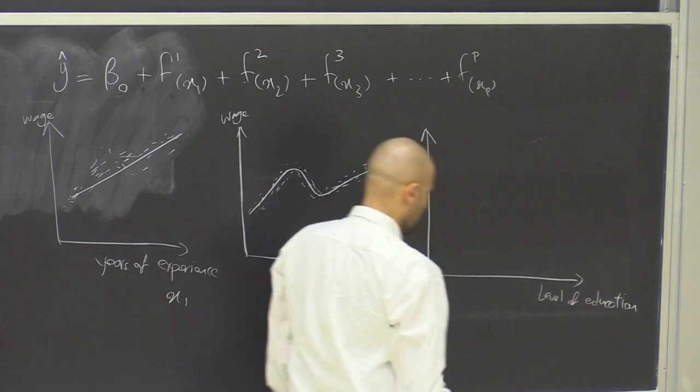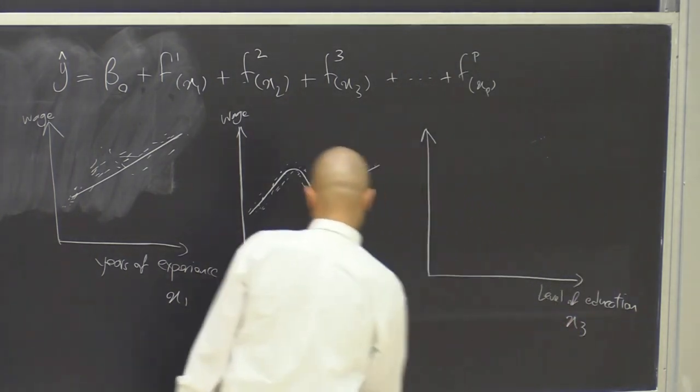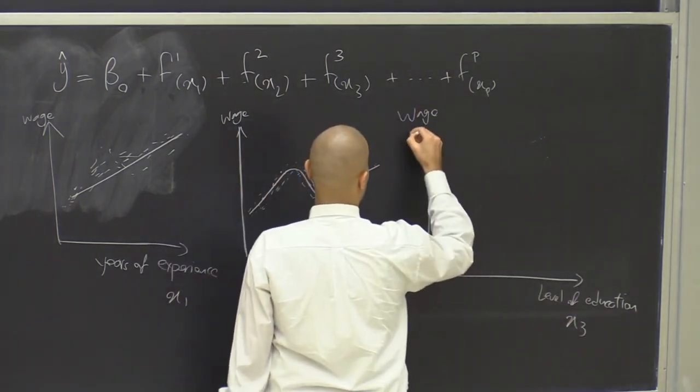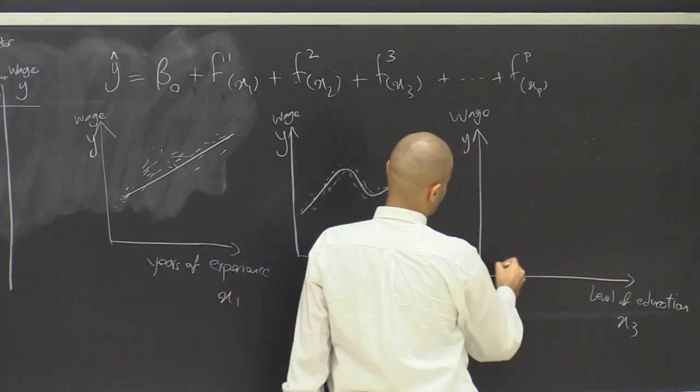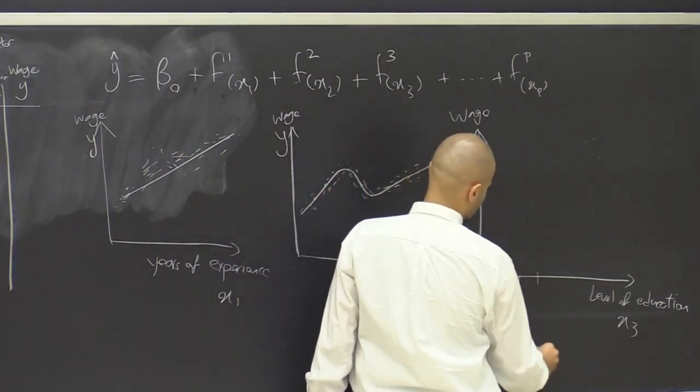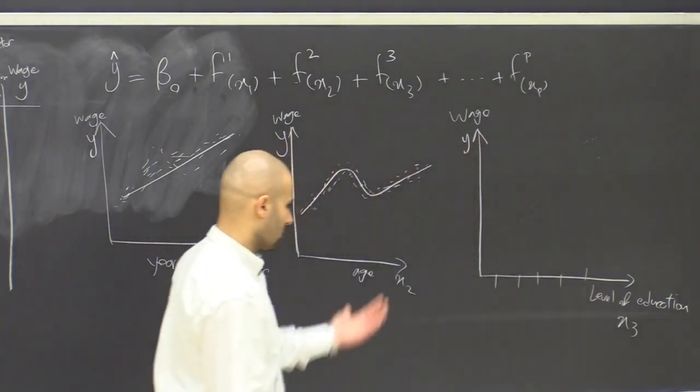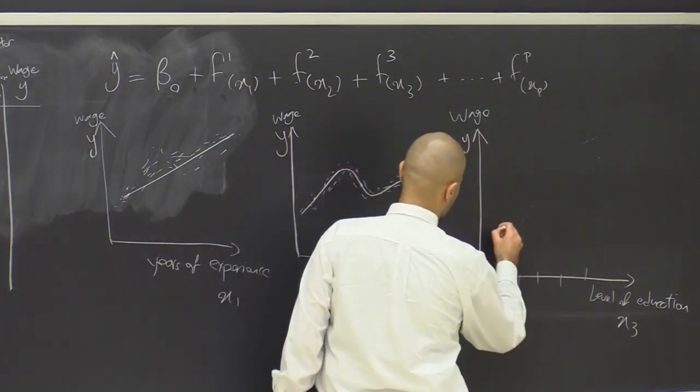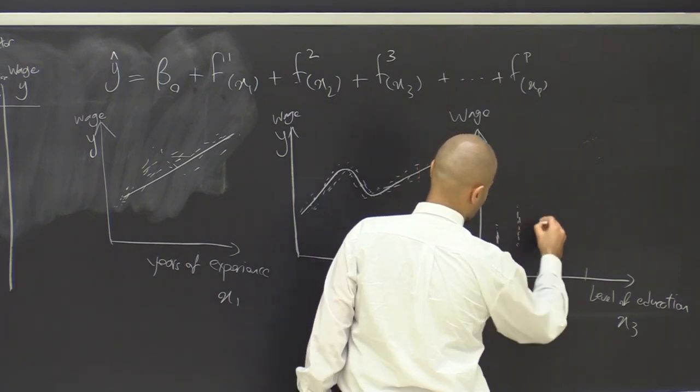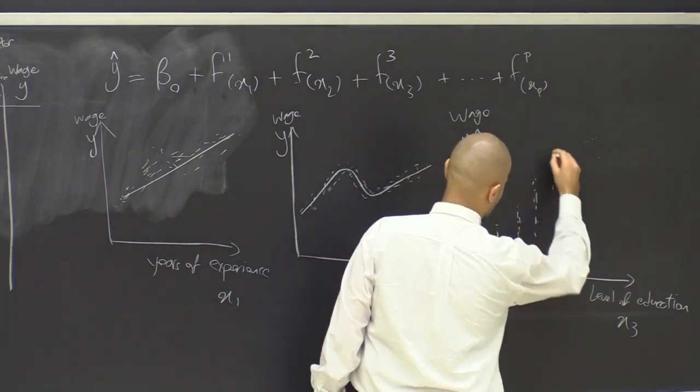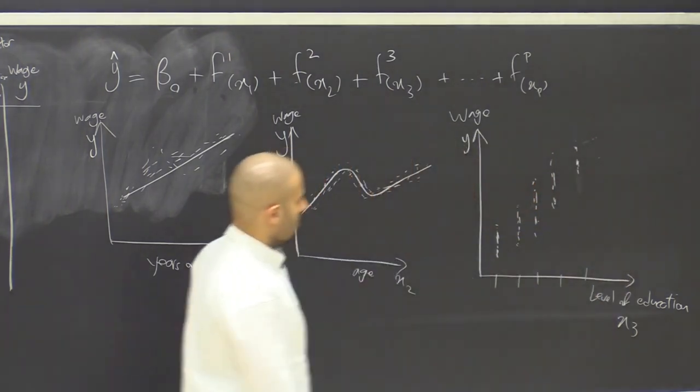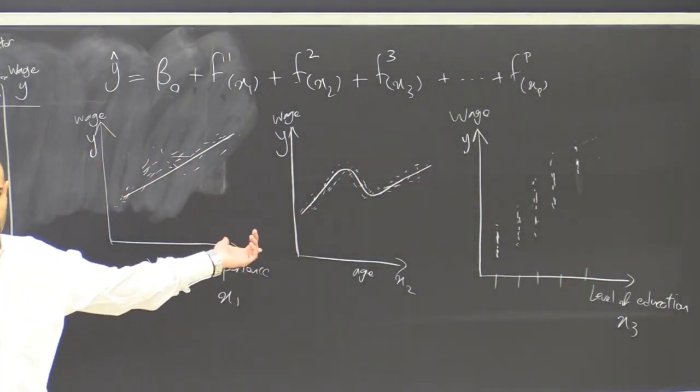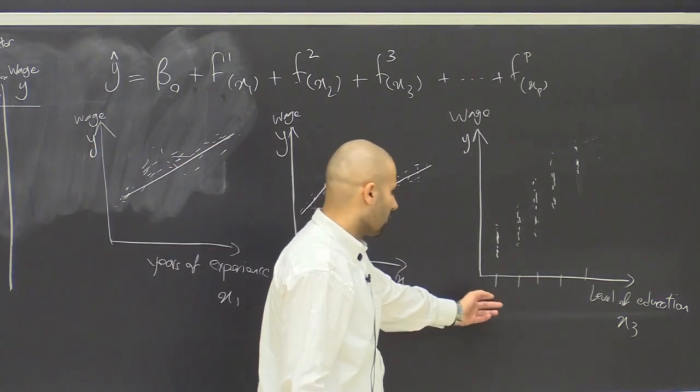And then let's say for level of education. So this is a question for you, for level of education, which is x3 and wage, which is y, let's say the data looks like this. As you know, we just have factors, we have levels of education, the data would be like this. So what do you think would be the suitable function for capturing this?